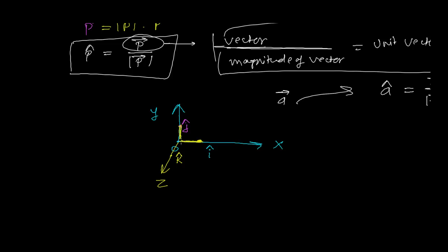So i-cap is the unit vector in the x-axis, j-cap is the unit vector in the y-axis, and k-cap is the unit vector in the z-axis. In 3D coordinates: i-cap is at (1, 0, 0), j-cap is at (0, 1, 0), and k-cap is at (0, 0, 1).